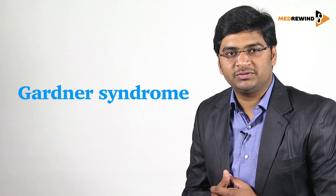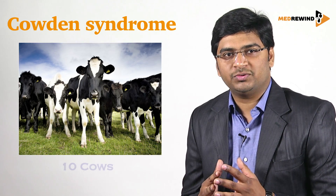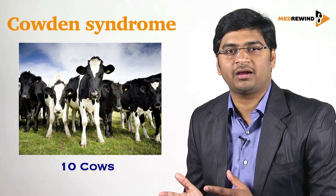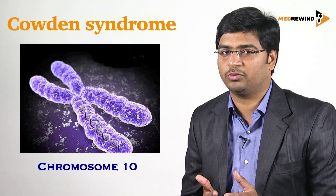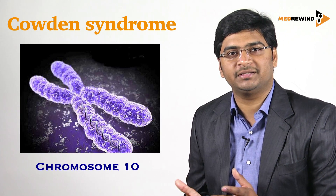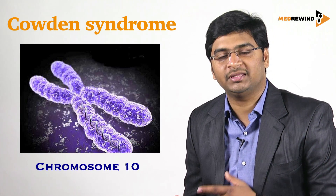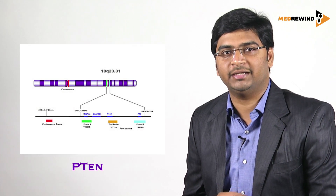There are various associated syndromes with FAP: Cowden syndrome, Gardner syndrome, and Turcot syndrome. For Cowden syndrome, remember it as 10 cows in a den — that forms 'Cowden.' Ten cows means the chromosome number is 10, and the gene is PTEN, indicating the number of cows.